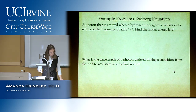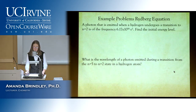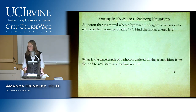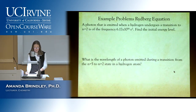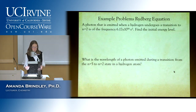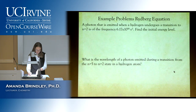For our first example: a photon is emitted when hydrogen (z equals one) undergoes a transition from the n equals two level. The photon emitted has a given frequency, and we want to find the initial energy level. We'll need E equals h nu and the Rydberg formula.